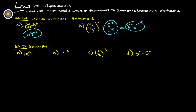Either one of those is fine. 13 to the 0 power — remember anything to the 0 power is 1. And 7 to the negative 2nd is 1 over 7 squared. We're rewriting it so it doesn't have a negative exponent.